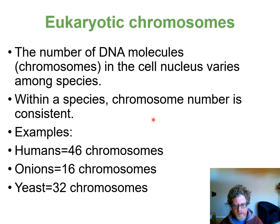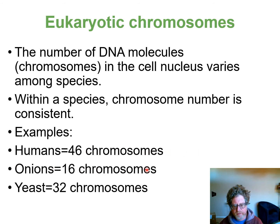The chromosome number is unique to the species: humans have 46 chromosomes — 23 pairs; onions have 16 chromosomes — 8 pairs; and yeast have 32 chromosomes — 16 pairs.